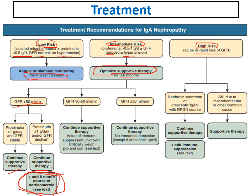If after six months of supportive therapy GFR is between 30 and 50, we should continue supportive therapy; the gain from immunosuppression is doubtful, risks for complications are high, and benefits are low. If GFR is less than 30, we should not give immunosuppression — supportive therapy only. For high-risk patients with nephrotic syndrome or crescentic IgA nephropathy with RPGN, we should give supportive therapy plus immunosuppression.